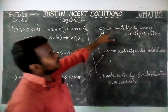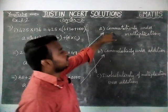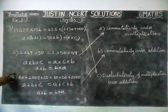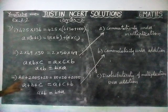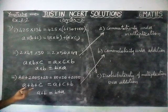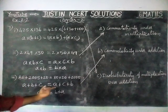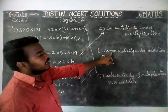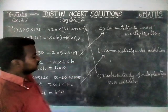That is commutativity under multiplication. And in the third question, if we interchange the place in addition also, left-hand side is equal to right-hand side. So this is commutativity under addition.